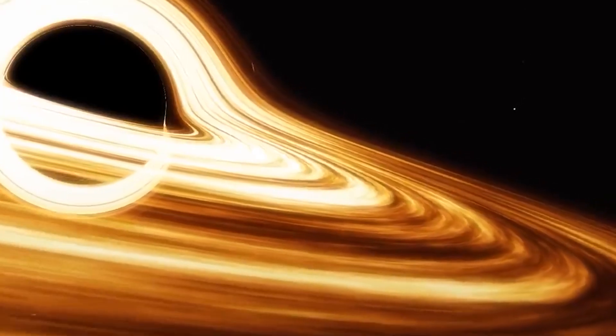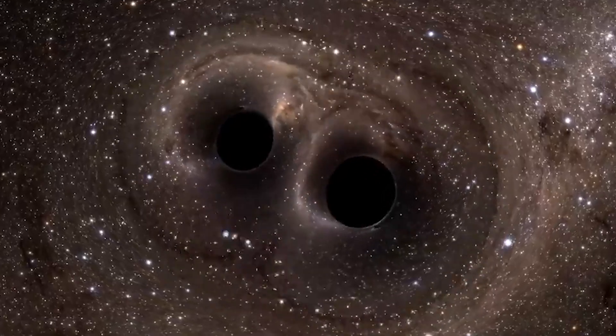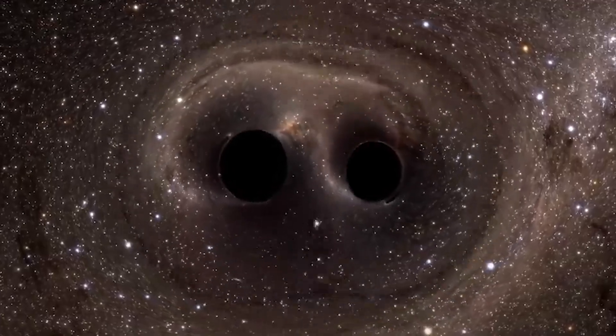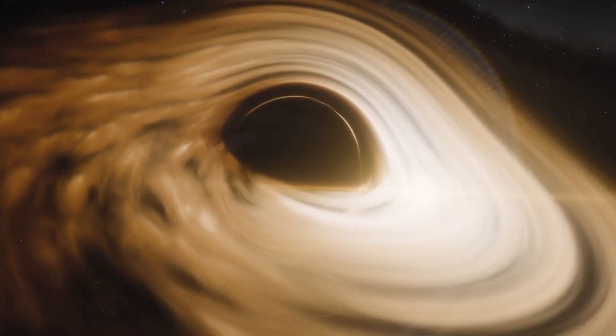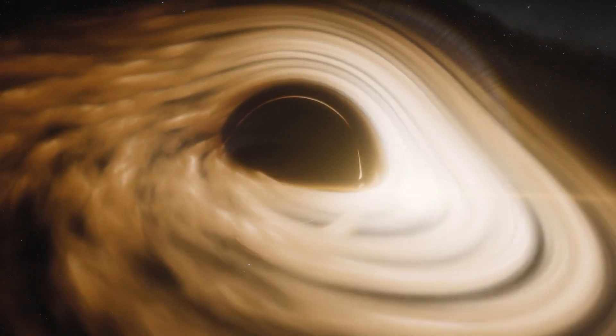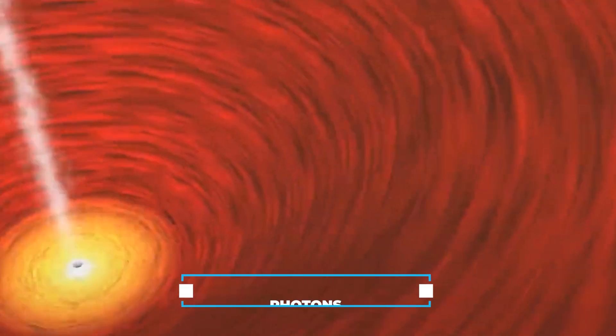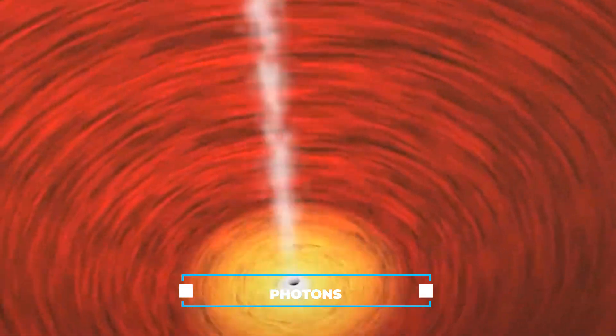Penrose had a theory that when he studied very old radiation from the early universe, he found hints that giant black holes from a different universe might have crashed into each other. These black holes were incredibly powerful, and their collision made waves in space that we can still see. Penrose believed that black holes don't just swallow things up. Instead, they break them down into particles of light called photons.